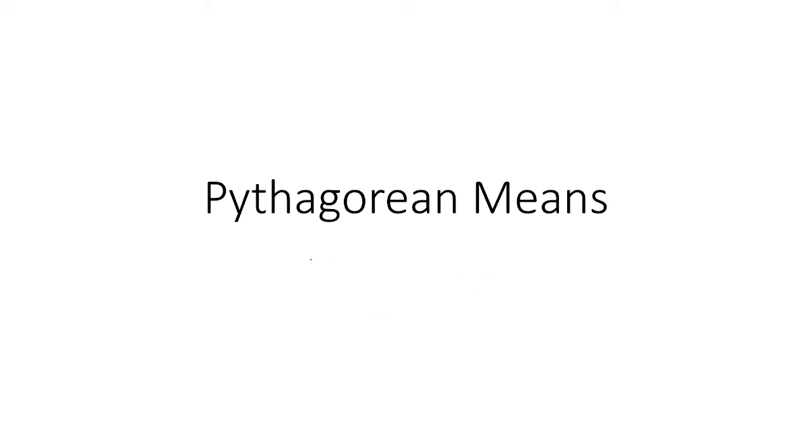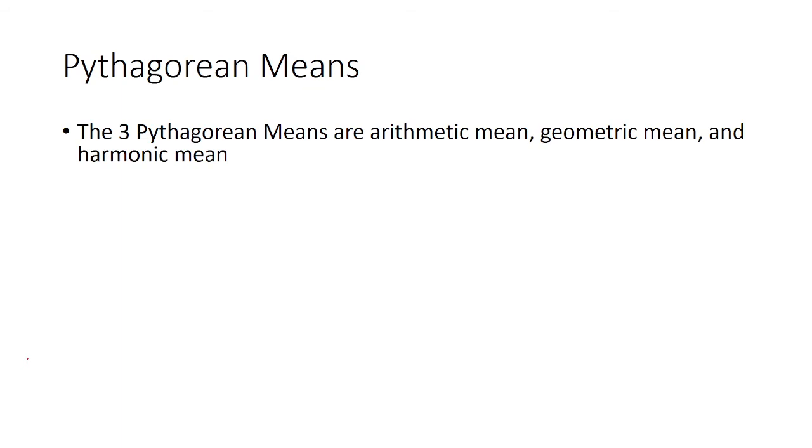In this video, we're going to be looking at Pythagorean means and their properties. There are three Pythagorean means: the arithmetic mean, geometric mean, and harmonic mean.